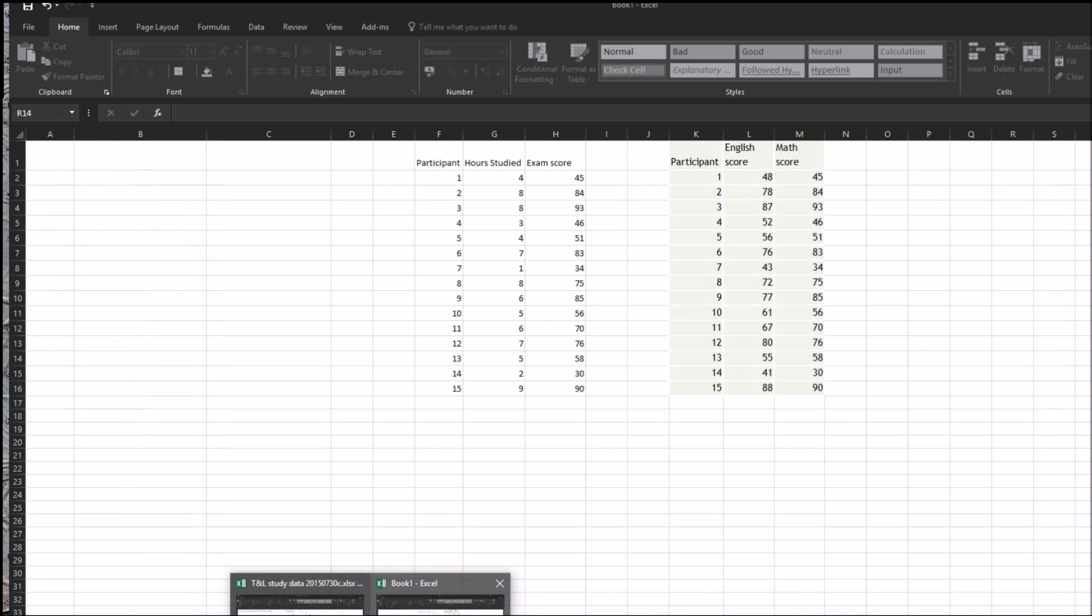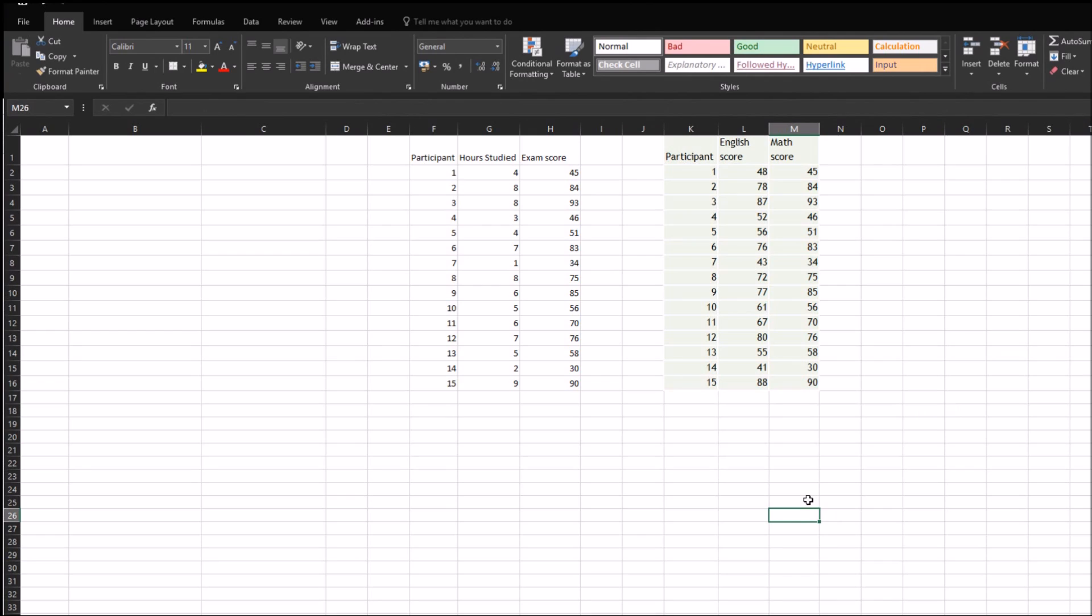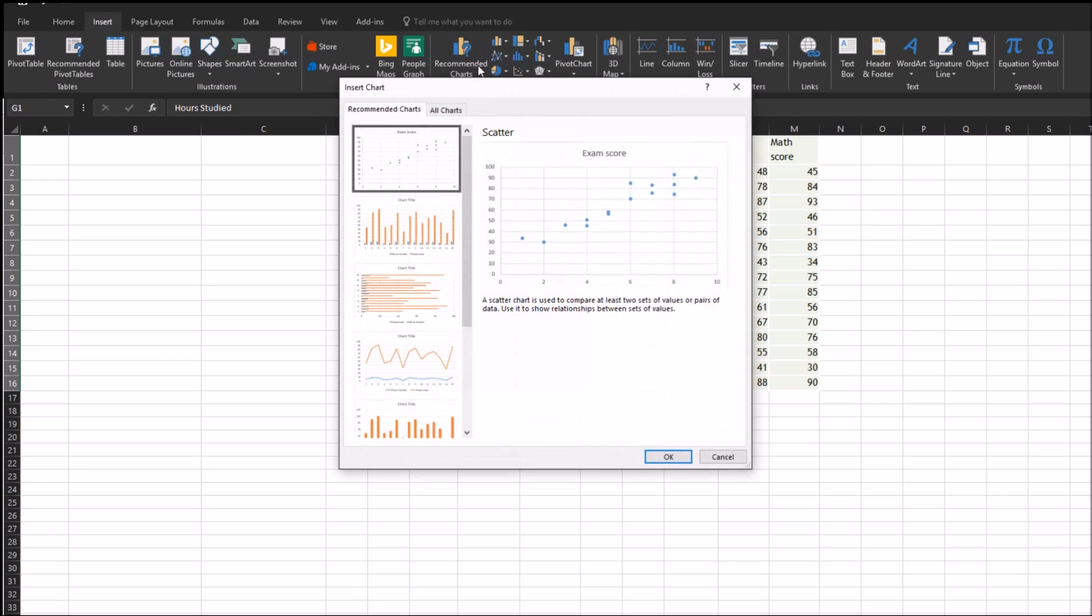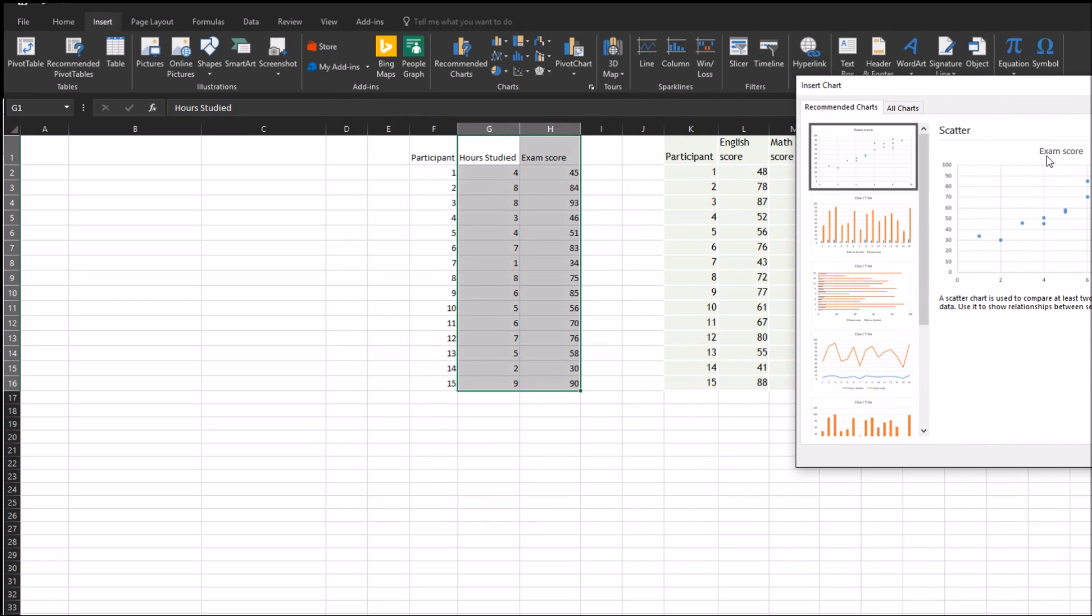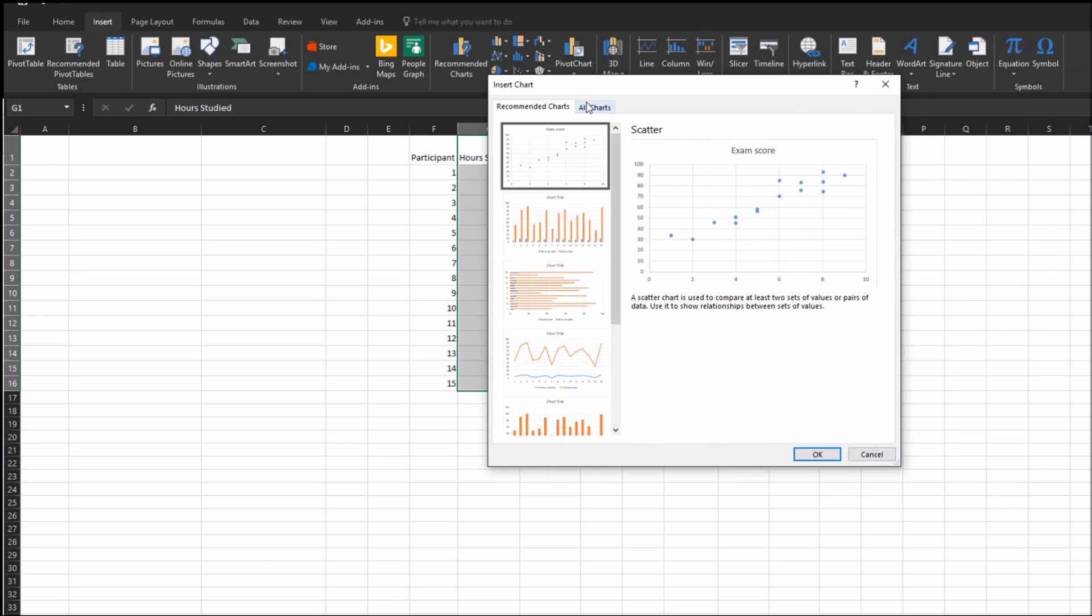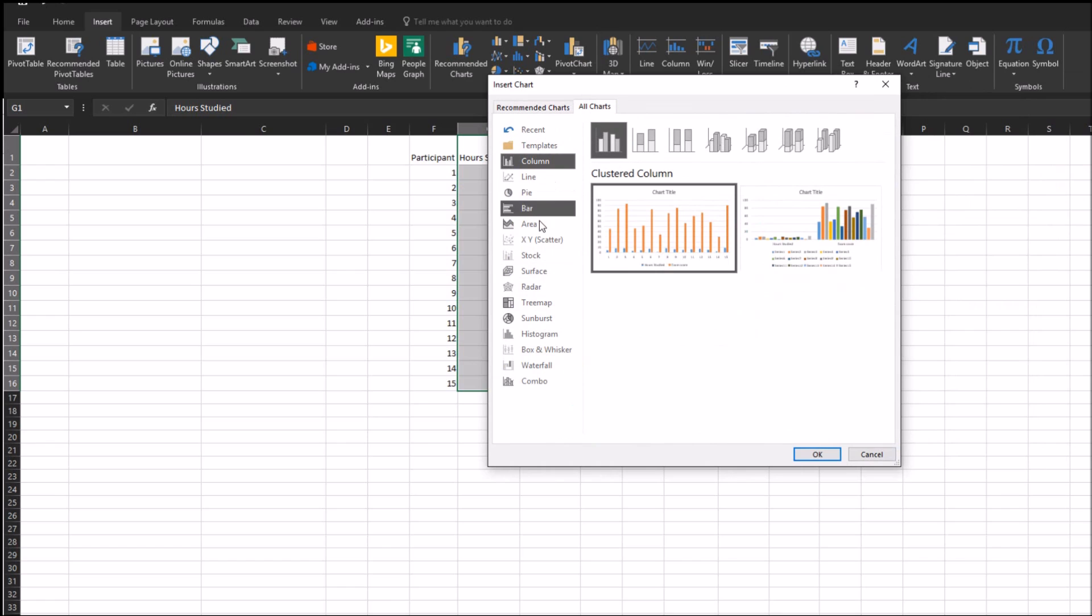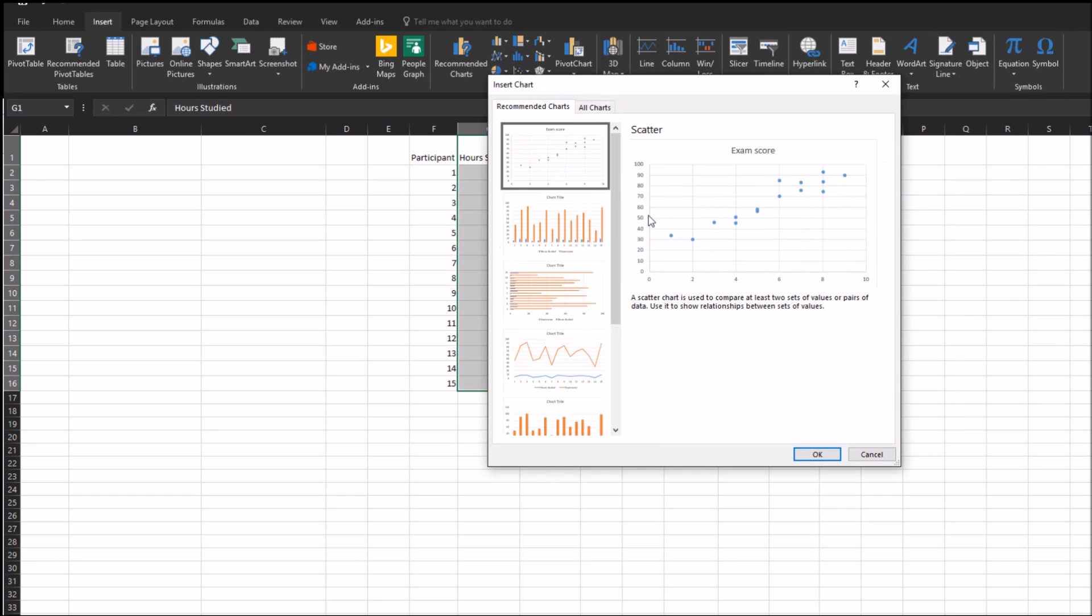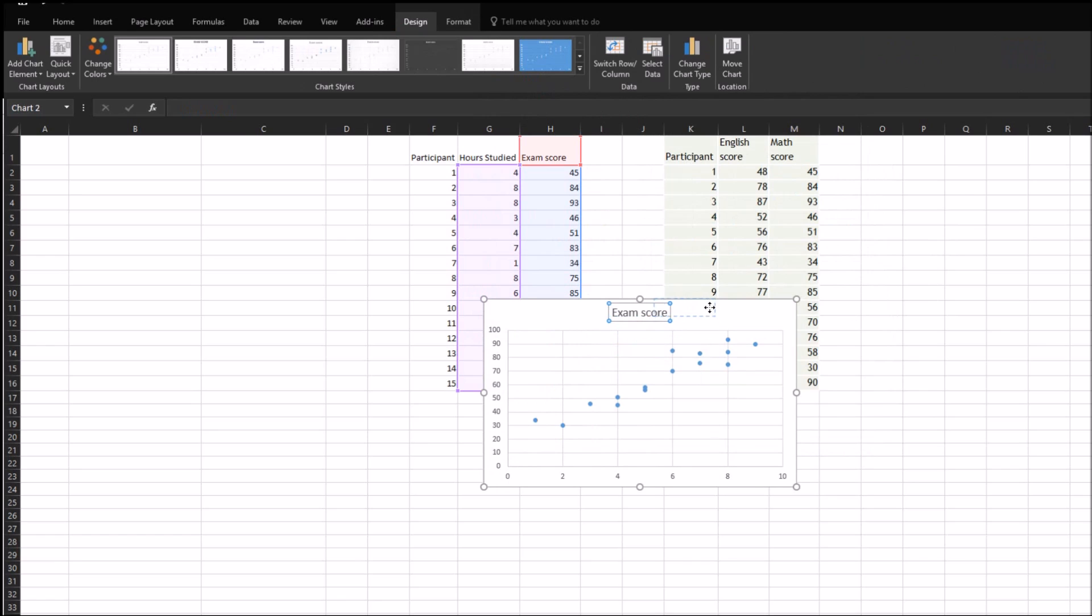If you want to calculate a scatter plot, I always find that Excel is much better for graphs than SPSS. You just enter the same data, and then you highlight the two variables that you want to calculate. Then you simply go to Insert, Recommended Charts. Because the data are lined up in such a manner, the first chart that would be recommended is a scatter plot. You can click that, or you can just go down here to scatter, XY scatter. Then you can choose the type of chart that you want. I'll be using this one here.